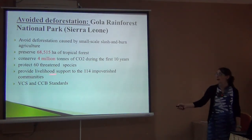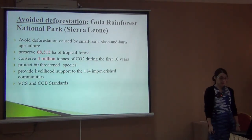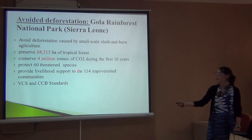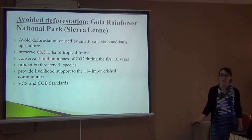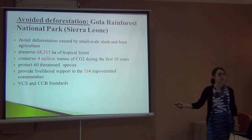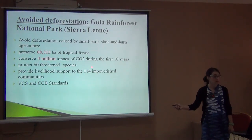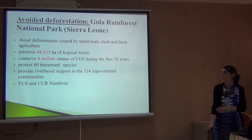This forest has 60 threatened species — it also has chimpanzees, forest elephants, and quite a few endemic monkeys and duikers that are in danger in the area. They tried to help support the livelihoods of 114 communities — just imagine the paperwork of getting all these people to sign that they agree with the project was a nightmare. They also tried to get certified VCS and CCB.